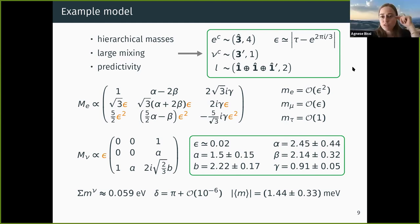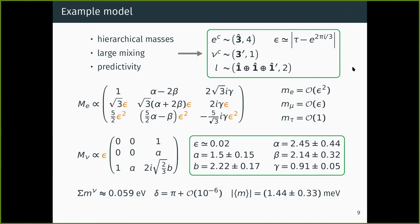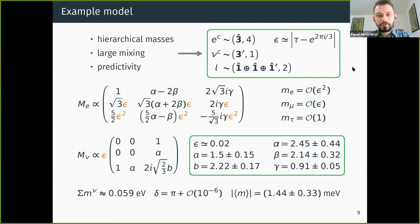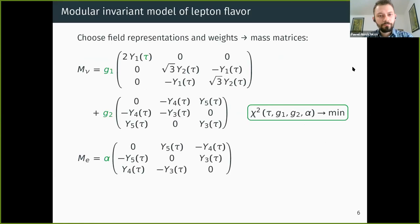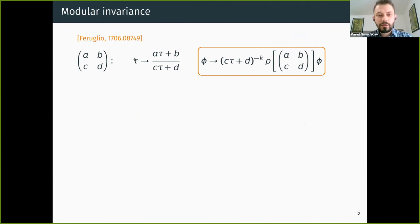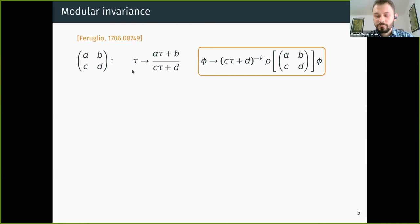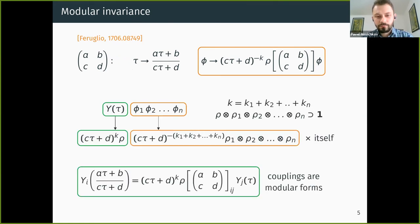Another question: this isn't really my field, but is modular symmetry a symmetry of the Lagrangian? Yes — we have ordinary fields in the theory and a new field τ, and both transform non-linearly under this symmetry. The only difference from typical symmetries is that it is realized non-linearly rather than linearly. Each term in the Lagrangian is invariant under this transformation rule, which is guaranteed by these transformation properties.